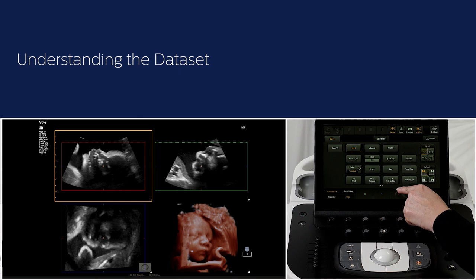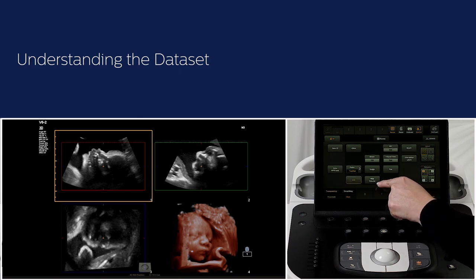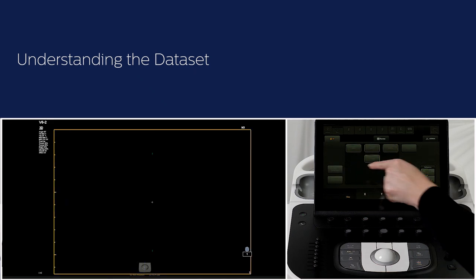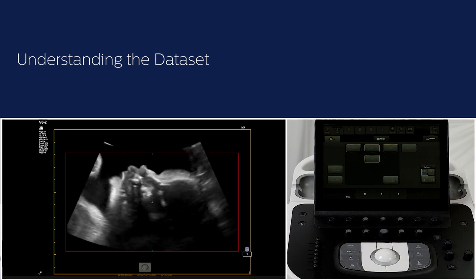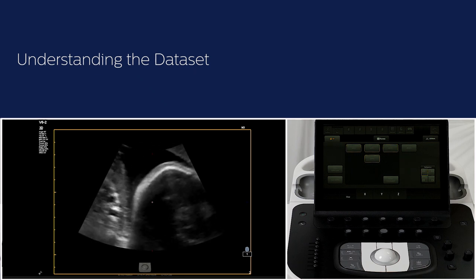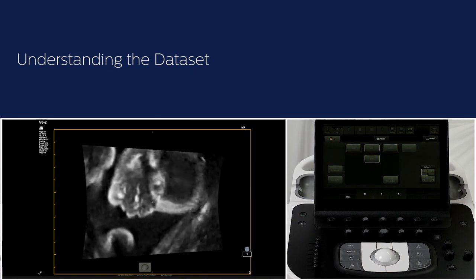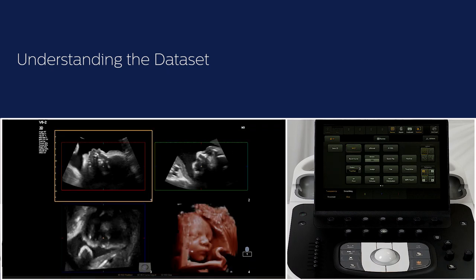Another option is to save the 3D MPR plane sweeps as cine loops. On the second page of the touchscreen, press NPR save and then save NPRs. The active plane is surrounded by a yellow box, and on each NPR plane we have a region of interest box indicated by the red, green and blue boxes. The dotted line indicates where the volume image comes from — the direction of the volume view.